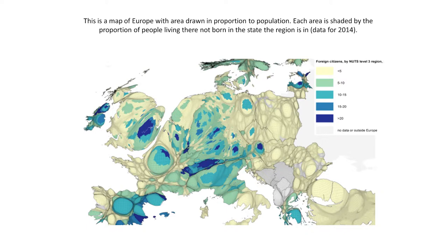Here's a map of Europe stretched out, and now we've shaded it according to the proportion of people in each area who were born in a different country to the one in which they're now living. So for much of Europe it's that pale yellow colour — less than 5% of people are in effect immigrants. Most of Britain is immigrant-free. All those yellow areas of Britain have hardly any immigrants, rather like Eastern Europe.